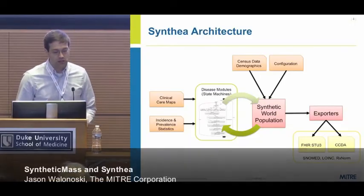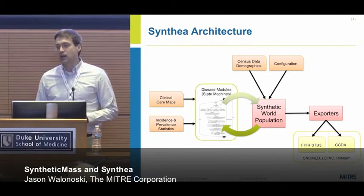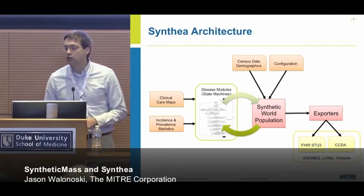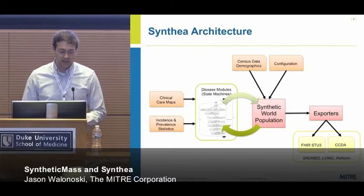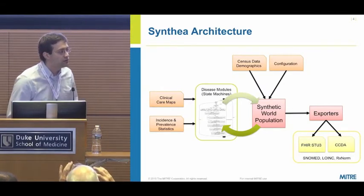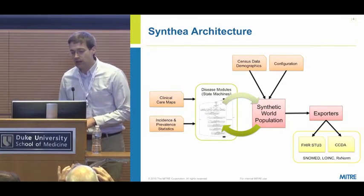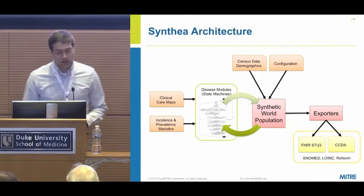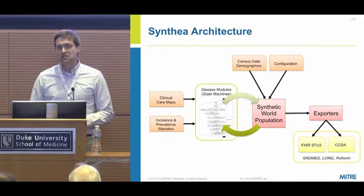Because if we build a healthcare system dependent on all this information, we need to capture it efficiently. One of the most problematic things in healthcare is the amount of time it takes to capture the medical record — and our most valuable resources are our clinicians. We do a lot of research: we find clinical care maps published in journals or provided by medical specialty societies, combine that with incidence and prevalence statistics from the CDC, and create state machines — we call them disease modules.